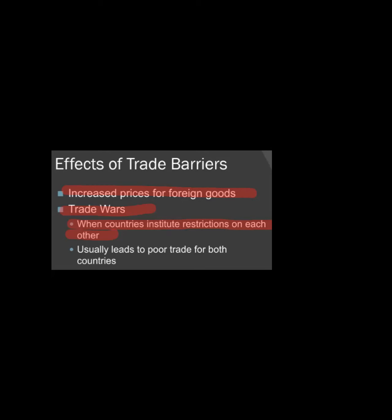For example, China has devalued its currency in response to trade restrictions. When China devalued its currency, its exports increased because its goods became cheaper. Trump imposed restrictions within his country saying foreign goods won't be able to sell here, but China countered by devaluing its currency. This is essentially a trade war. A trade war usually leads to poor trade for both countries — both countries end up losing in such situations.